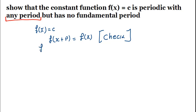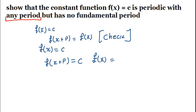Since we are given the constant function f of x equals c, we are going to say f of x plus p is going to be equals to c. If this is true, this simply means we can also write this as f of x equals c, which is something already written. This is actually very true, and everything has been stated in the question.